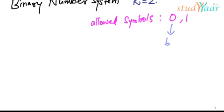These symbols are called bits. If I have a number like d0, d1, d2 till dn minus 1, then all these d0, d1, d2 are bits, and d0 is the least significant bit.